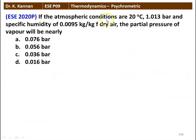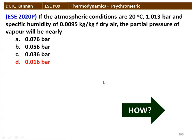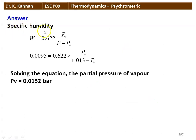Next question: atmospheric conditions are 20°C and 1.013 bar with specific humidity of 0.0095 kg/kg of dry air. Find the partial pressure of water vapor. Using W = 0.622 × PV / (P − PV), substituting 0.0095 = 0.622 × PV / (1.013 − PV), solving gives partial pressure of water vapor = 0.0152 bar. The correct answer is 0.016 bar.